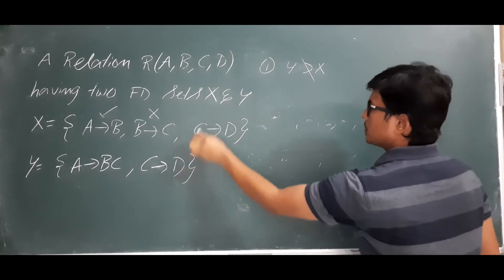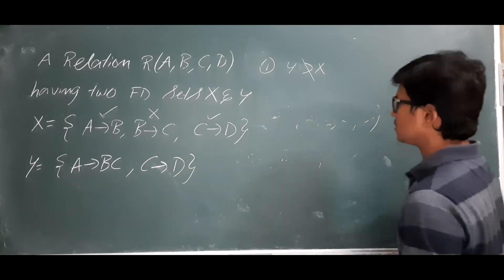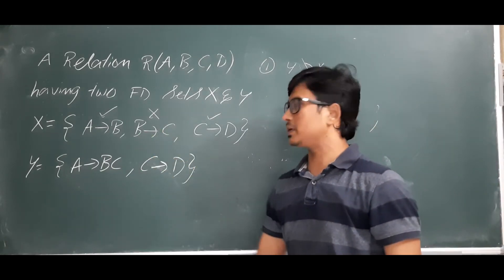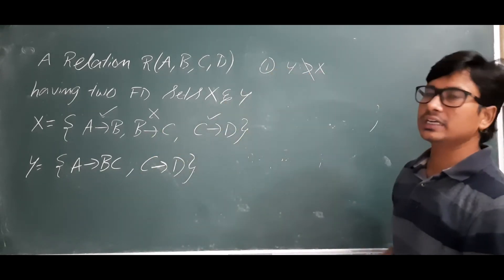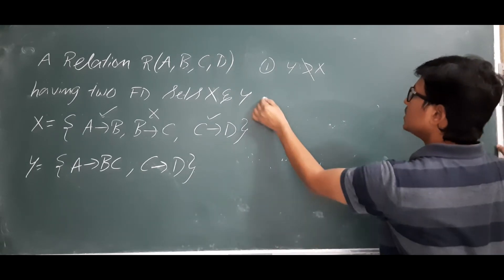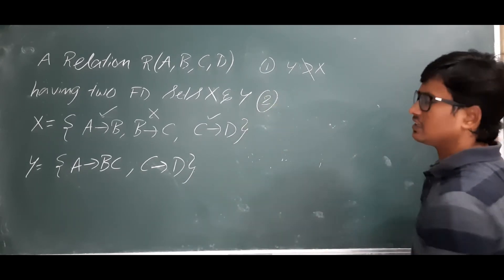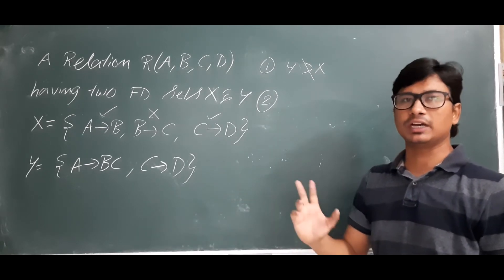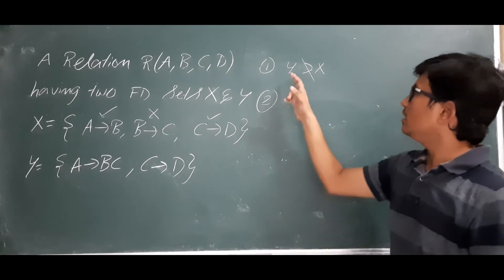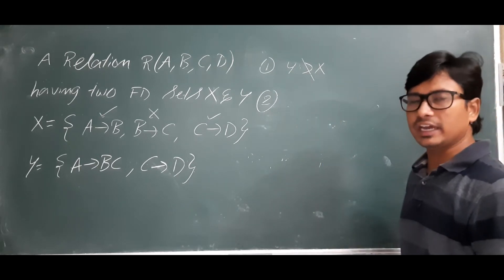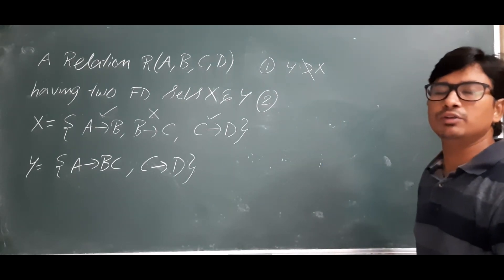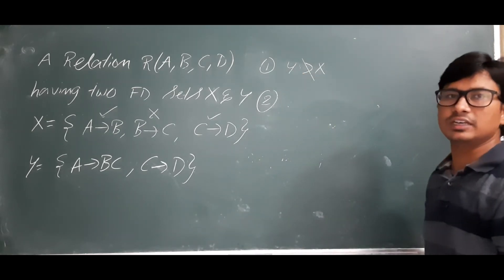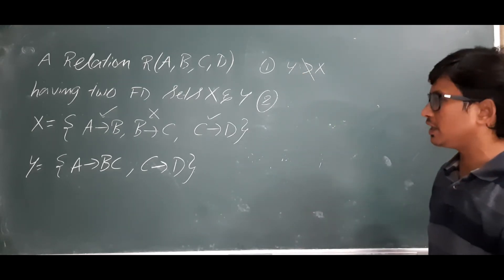C→D is directly present so we don't need to worry about that. But since B→C is not present in Y, we can say that Y does not cover X. At this point itself we can say X is not equal to Y, because for equivalence both Y covers X and X covers Y must hold.